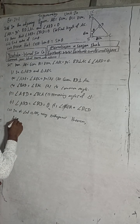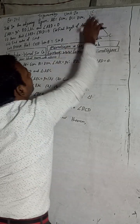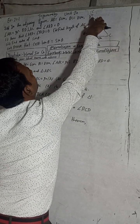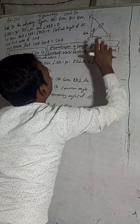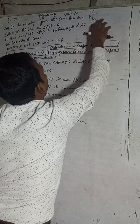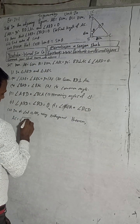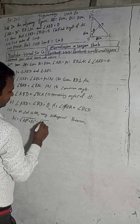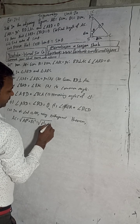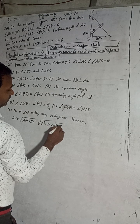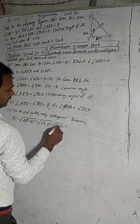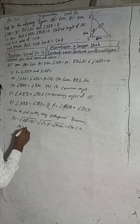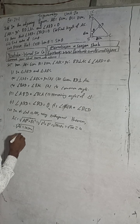AC is our hypotenuse in this right angle triangle. So AC squared equals AB squared plus BC squared. AB value is 6, so 6 squared is 36; BC value is 8, so 8 squared is 64. Therefore AC squared equals 36 plus 64 equals 100, which gives AC equals 10. Therefore AC is equal to 10 cm.